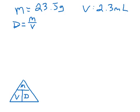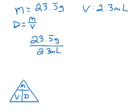So this is a very straightforward one — nothing weird going on here. All I need to do is put the mass over the volume. I simply take 23.5 grams over 2.3 milliliters. I won't be canceling any units because density is grams per milliliter, a mass over volume.